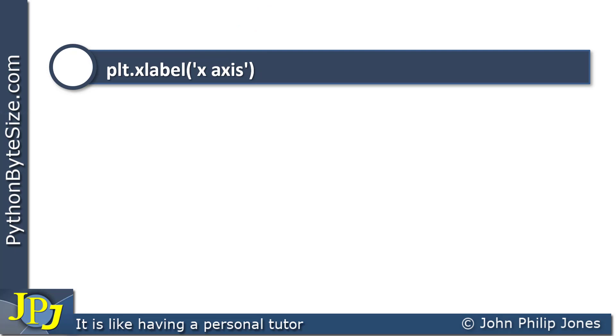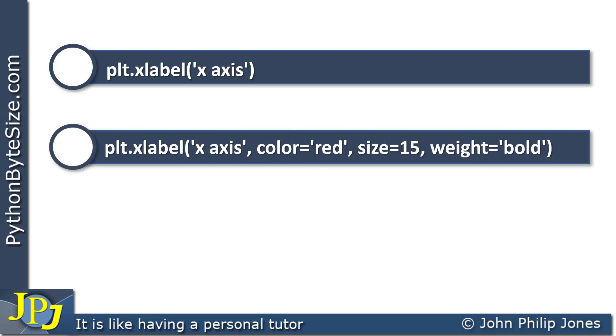What I can also do, I can arrange to call this again, but this time pass in more arguments, as you can see here, where I'm making the color equal to red, the size equal to 15, and the weight of the font that's going to be shown as bold.